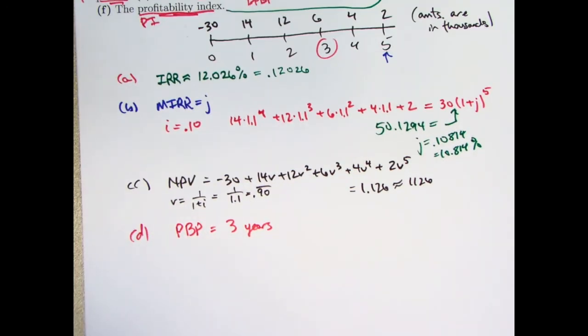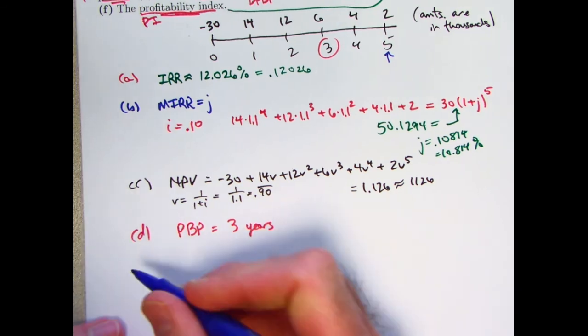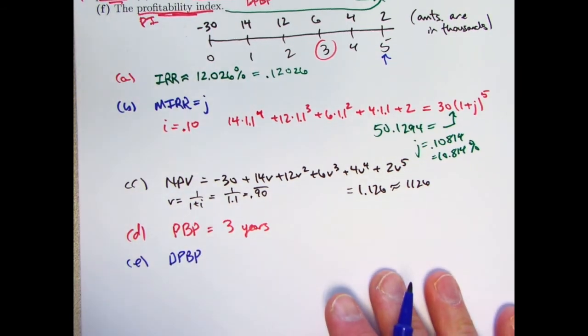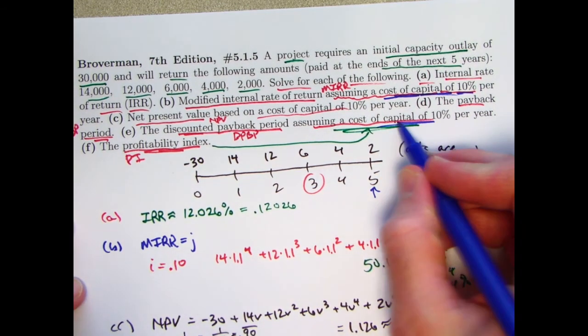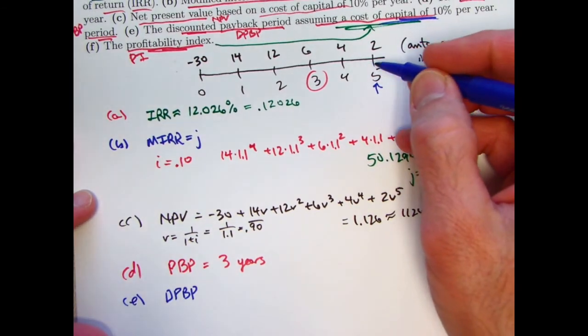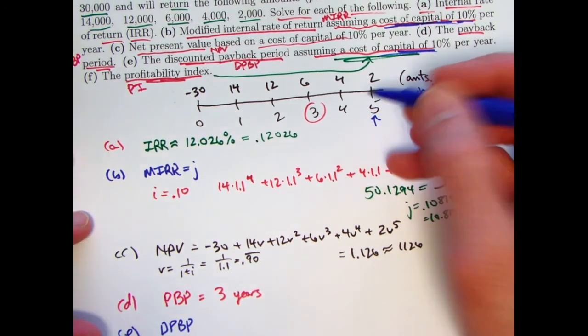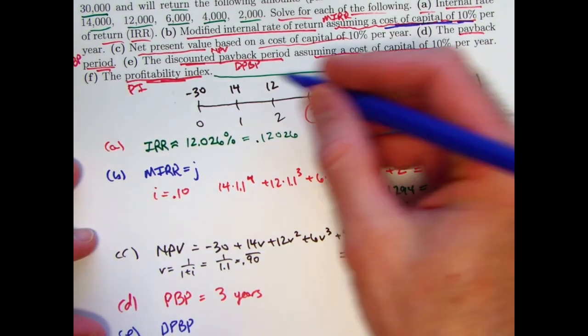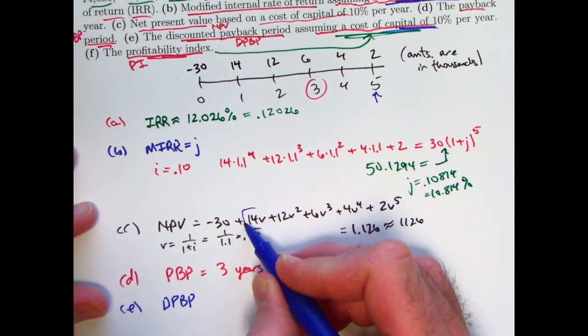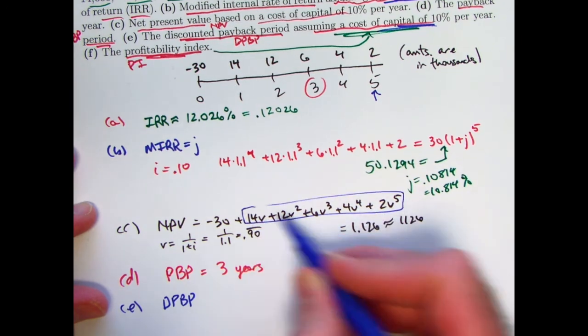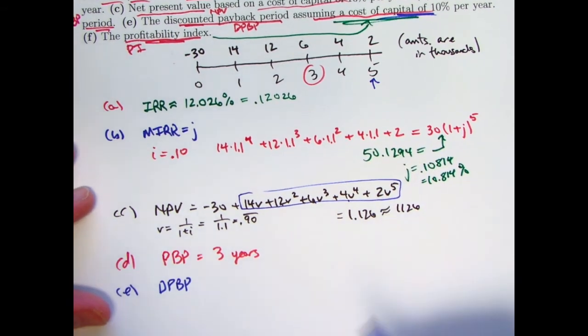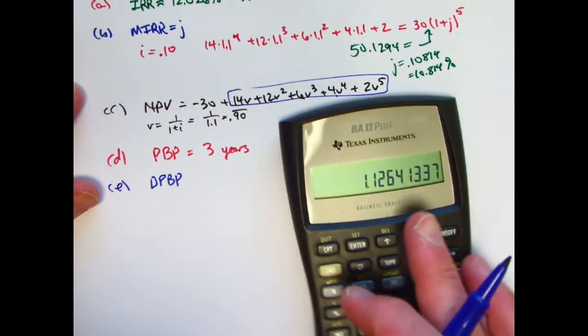More important, though, is the modified discounted payback period, I should say, where we do take the time value of money into account, according to the cost of capital, the 10% again. So now the question is, what's the first moment in time when our discounted, when our present value of our returns is higher than what we invested? So there you're really thinking about this part of the net present value equation and continuing to add these terms until you get above 30.